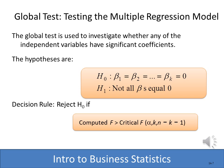As we did with single regression, with multiple regression we also need to perform a global test. A global test tests the hypothesis that the slope of all the independent variables is actually 0. The alternate hypothesis is that at least one of the x variables has a slope that is not equal to 0 — in other words, at least one independent variable is a significant predictor of the dependent variable.